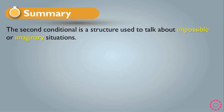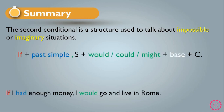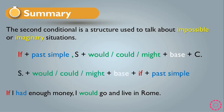Now we have a summary of the second conditional. The second conditional is a structure used to talk about impossible or imaginary situations. The first rule is: if + past simple, comma, subject + would/could/might + base + complement — used when 'if' is at the beginning. The second rule is: subject + would/could/might + base + if + past simple — used when 'if' is in the middle of the sentence.